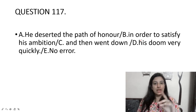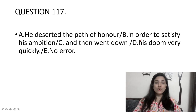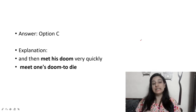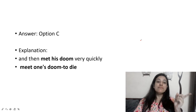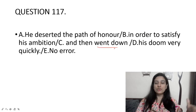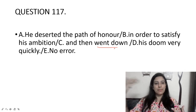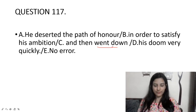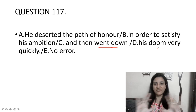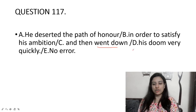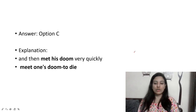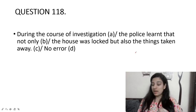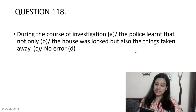He deserted the path of honor in order to satisfy his ambition and then went down his doom very quickly. The answer is option C. You do not 'go down' the doom — you 'meet' the doom. 'Doom' means destruction or failure. He abandoned the path of honor to satisfy his ambition, and in doing so met his doom. So it should be 'met his doom,' not 'went down his doom.'